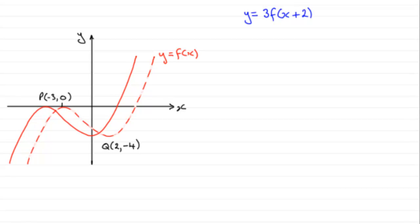So we now have two points of interest. This stationary point that was at minus 3, 0 is now at minus 5, 0. We'll just put minus 5 there.